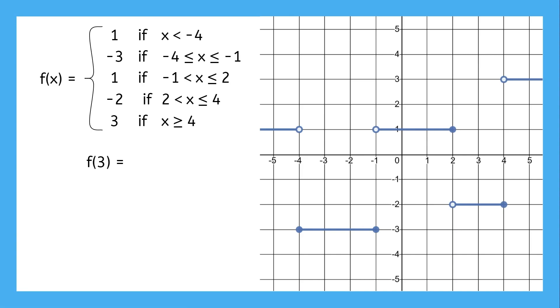We've got two ways to figure this out. First, 3 is between 2 and 4, and any input between 2 and 4 gives an output of negative 2. We could also use the graph. If the input is 3, we can see that the output is negative 2.